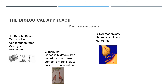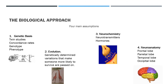The third assumption is neurochemistry, including neurotransmitters such as dopamine and serotonin, and hormones such as testosterone and adrenaline — both acting as messengers allowing different signals to travel around the body in two different ways. We also have neuroanatomy, including the frontal, parietal, temporal and occipital lobes as the main lobes controlling behaviour, as well as the left and right hemispheres and localised functions including Broca's area and Wernicke's area, which will be covered in more detail during biopsychology.